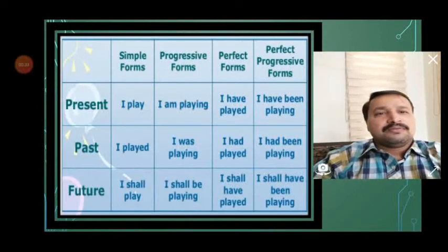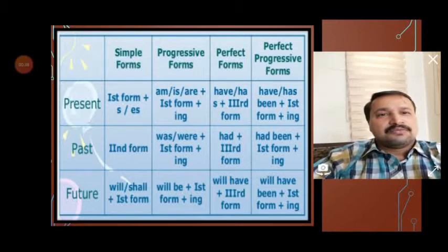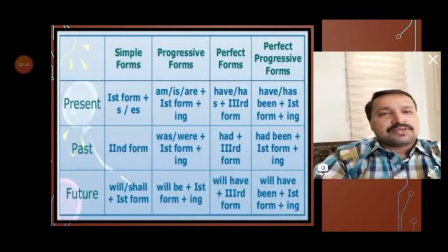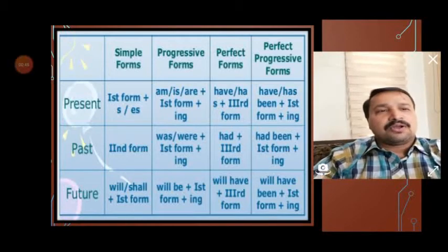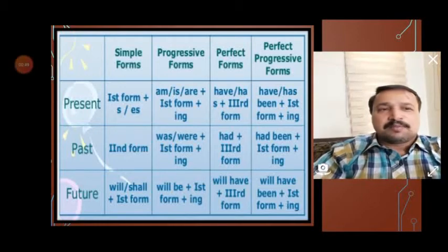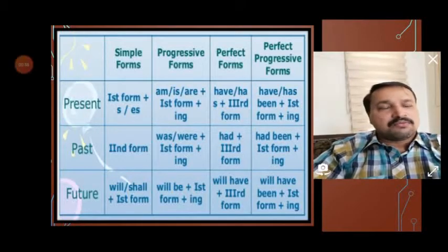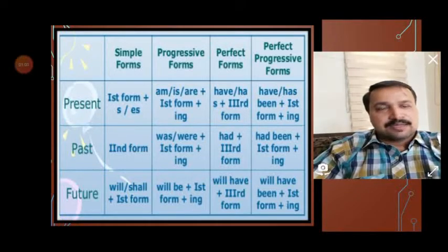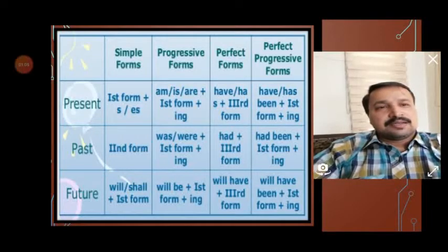First of all, we can see the simple present tense. The form uses the first form of the verb added with 'do' or 'does'. When 'do' is added, the verb does not make any change. But if 'does' is added, the verb form will be changed with the addition of 's' or 'es'. The second one is present progressive tense.